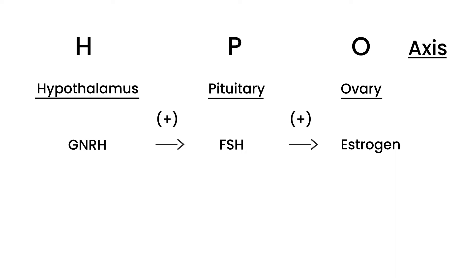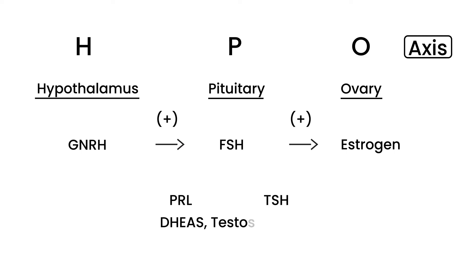If any of these hormones are disrupted — either too high or too low — it can disrupt this axis. There are other hormones that can also disrupt this axis: prolactin, TSH, and the androgens which are DHEA and testosterone. These are some of the key players to remember.